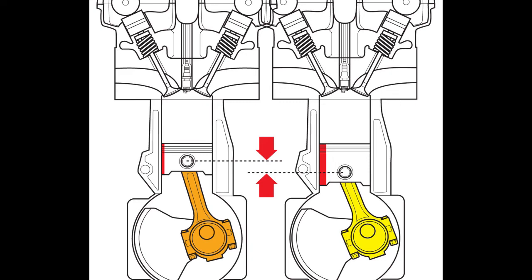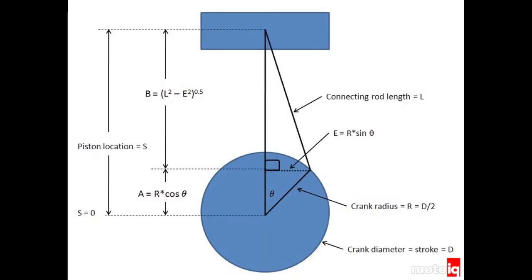That's not to say you can't use a lower rod stroke ratio to run your engine to a higher RPM range, maybe in the region of 8500 to 9000 RPMs, provided you are using quality parts. At lower rod stroke ratios, using factory parts will end up badly because the factory engineers only designed the pistons and connecting rods to handle the factory rev limit.